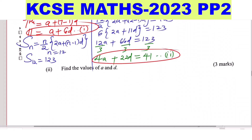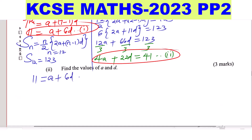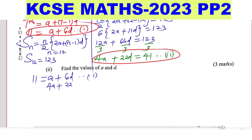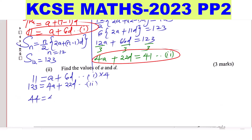Part 2: find the values of A and D by solving the two equations simultaneously. Equation 1: A plus 6D equals 11. Equation 2: 4A plus 22D equals 41. Using the elimination method to eliminate A, multiply equation 1 by 4 to get 4A plus 24D equals 44.